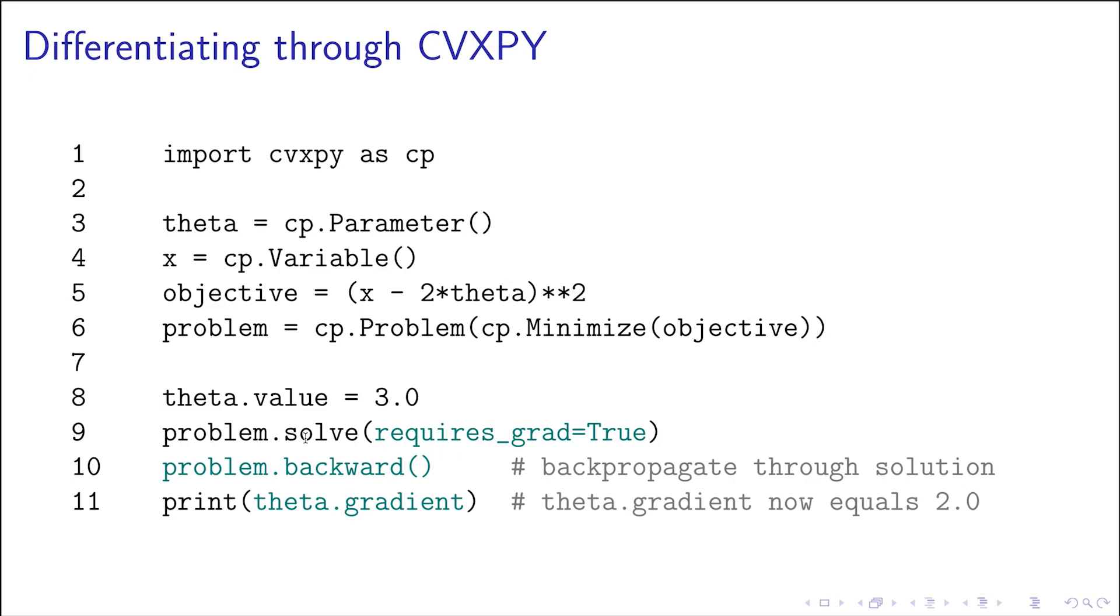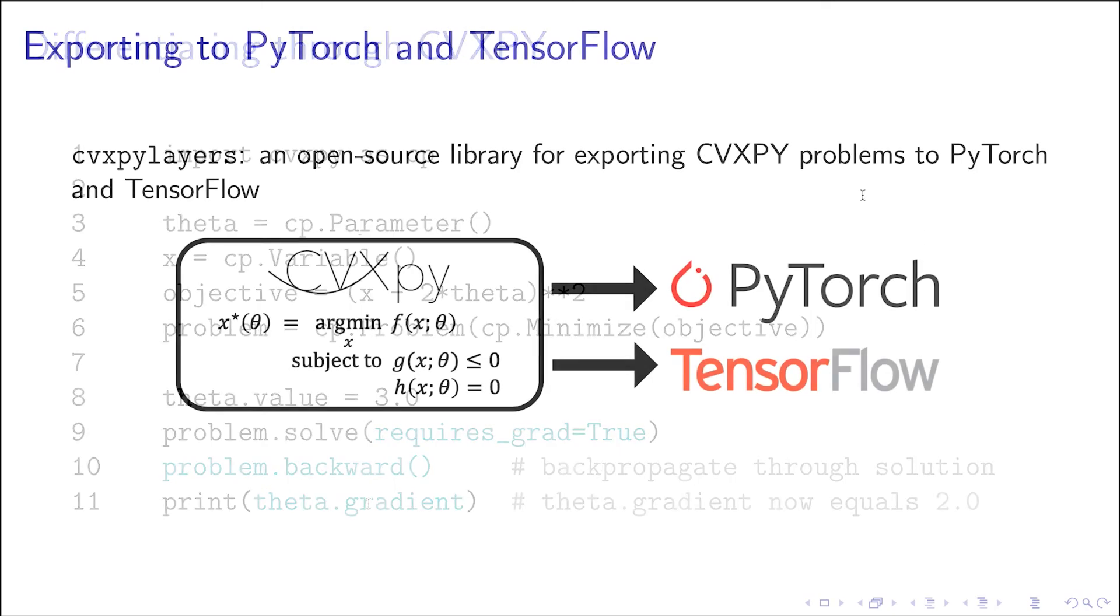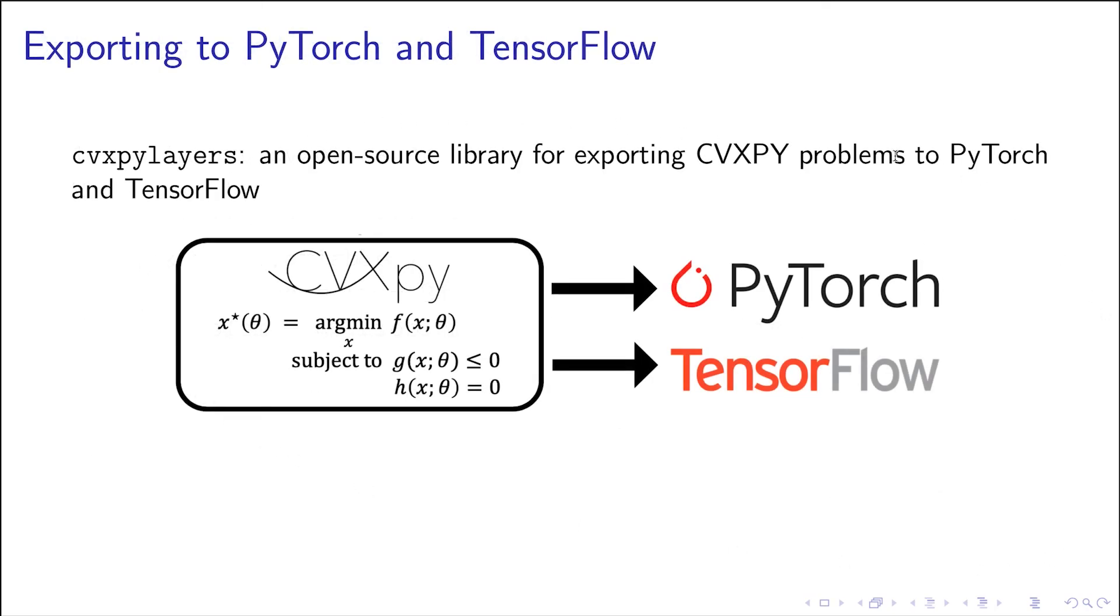And we've created CVXPyLayers, which is a package that takes in a CVXPy problem that satisfies these restrictions, this grammar, and it can either output a PyTorch layer or a TensorFlow layer—they're both supported. It's very simple: you just feed in your problem, and then you say what the inputs are in terms of parameters and what the outputs are in terms of variables.